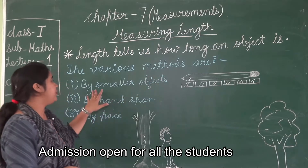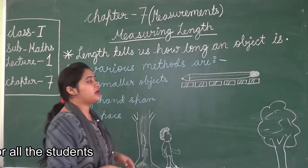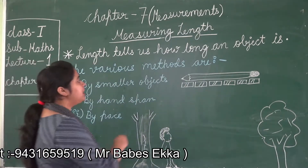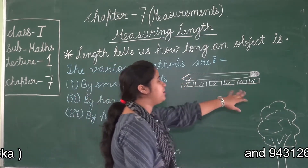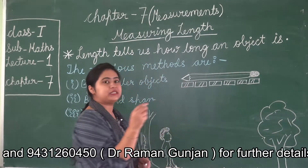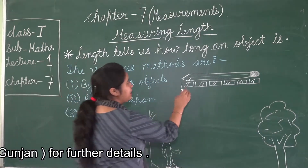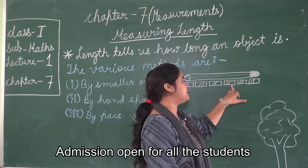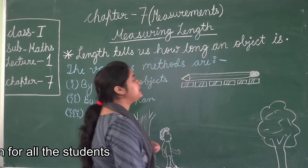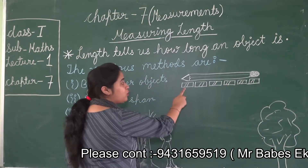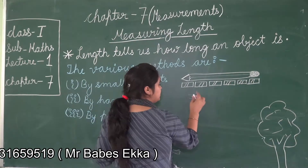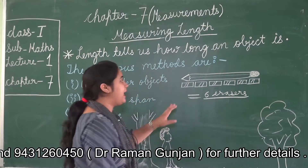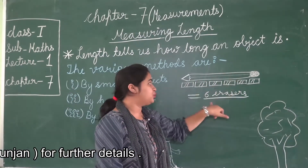The first method is by using a smaller object. Children, we can measure length using a smaller object. For example, if we have to measure the length of this pencil, we can use smaller objects like erasers. Here I have placed erasers one by one: 1st eraser, 2nd eraser, 3rd eraser, 4th eraser, 5th and 6th eraser. So the length of this pencil is equal to 6 erasers.